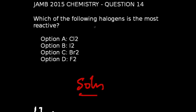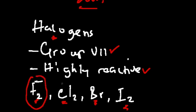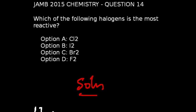Question 14 of JAM 2015 chemistry exams: Which of the following halogens is the most reactive? Halogens are elements found in group 7 of the periodic table and are highly reactive. They include fluorine, chlorine, bromine, and iodine. Among these, the most reactive is fluorine, followed by chlorine, then bromine, then iodine. So the correct answer is option D, which is fluorine.